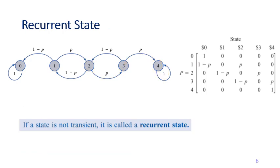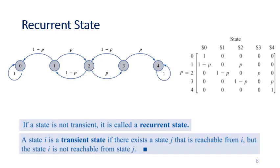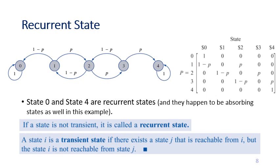If a state is not transient, it is called a recurrent state — recurrence simply means it is not transient. From the gambler's ruin example, state 4 and state 0 are recurrent states, and they also happen to be absorbing states in this example. But remember, that is not always the case — the definition of recurrent is simply that a state is not transient.